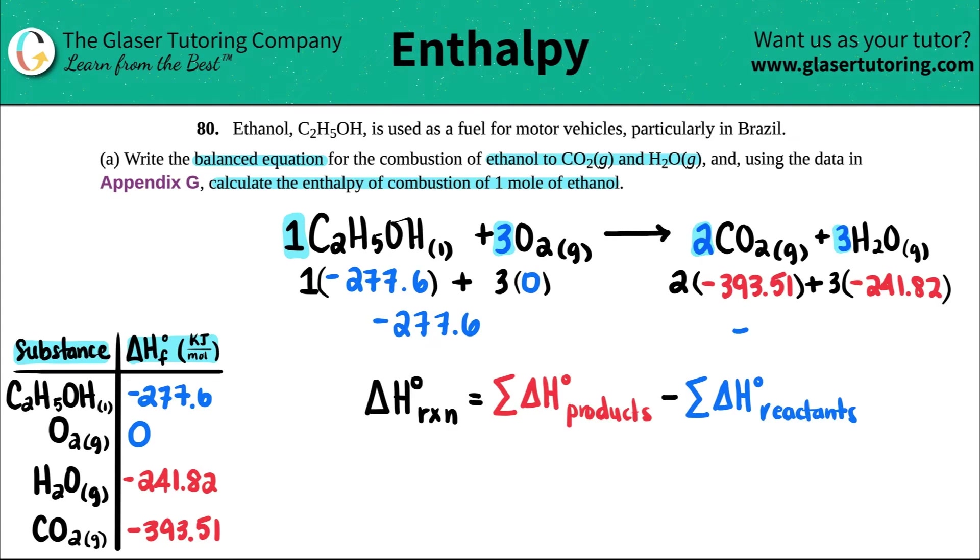All right, let's get one number for the reactants and the products. So the left side would just be the negative 277.6. And then the right side would be two times negative 393.51 plus three times negative 241.82. So I get a negative 1512.48. I just want to make sure that I put the right numbers in the calculator because a little slip up may cause big problems. Okay. I think we're good.